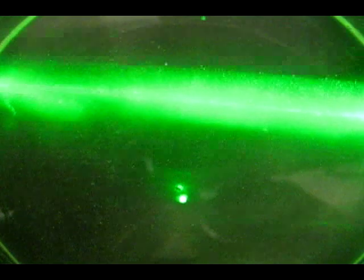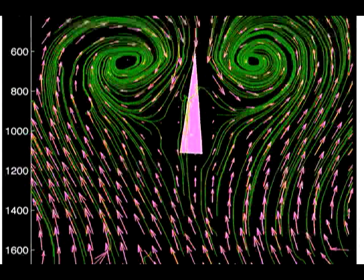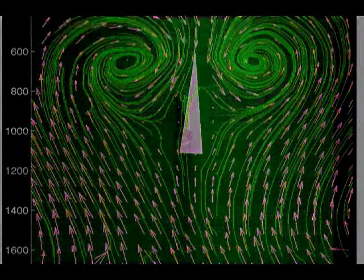Particle image velocimetry is a method where many neutrally buoyant particles are randomly distributed into the fluid. A laser sheet illuminates one section of the experiment to be picked up by a camera. A computer checks the motion of the particles and the entire velocity field of that section can be determined. Here, the fluid motion around a flapping fin is analyzed.